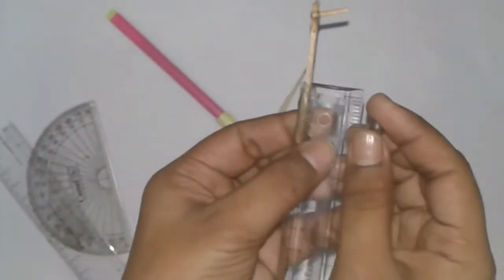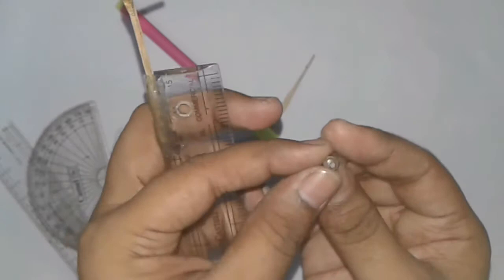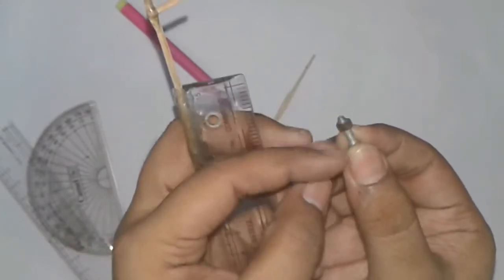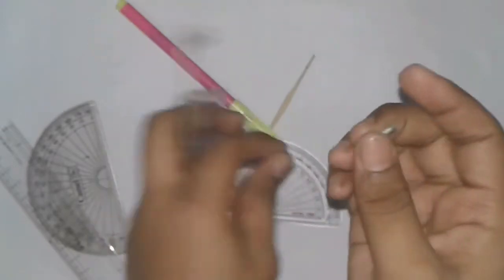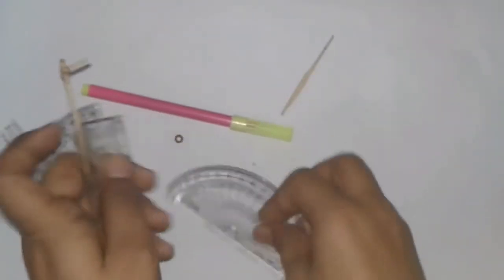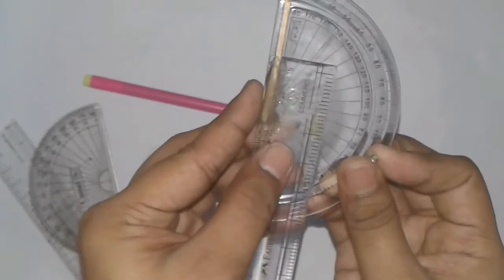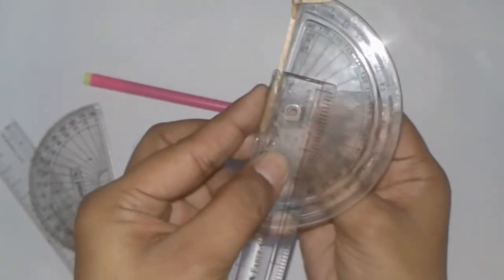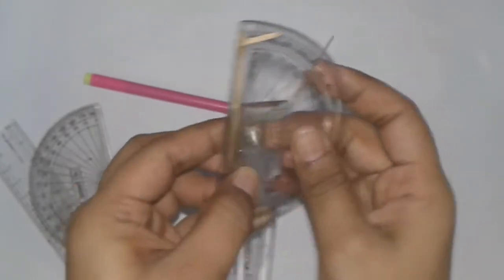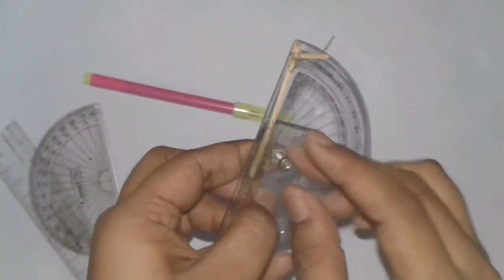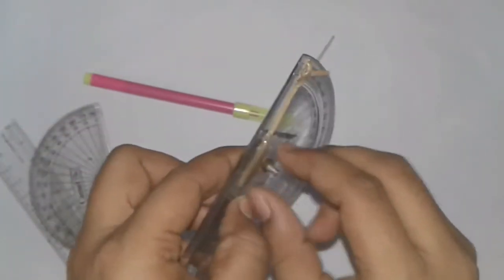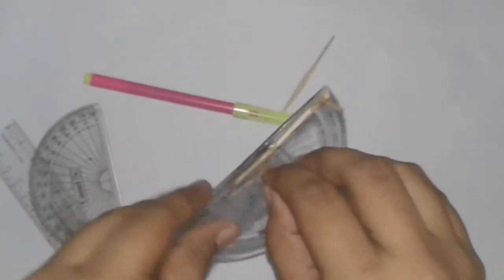Now make sure that the diameter of the hole is equal to the diameter of that bolt. Now after that, you need to attach it by that way and make it tight.